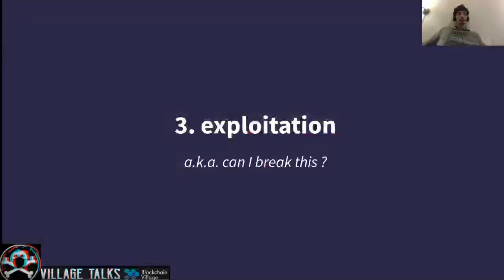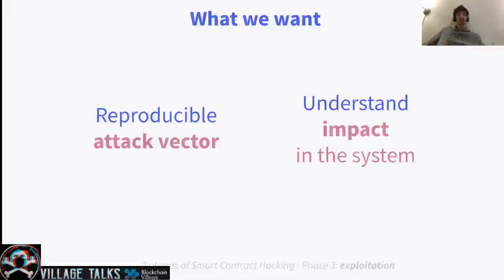Once we have found vulnerabilities, it's time to exploit them — another fun part of doing security research. To do exploiting, what we want is first to have a reproducible attack vector — some way of sharing with the client or the bug bounty report we are about to submit, proving that there is a vulnerability that can be exploited under a certain scenario. We also need to understand the impact that exploiting this would have in the system, and for that we need business logic knowledge related to the system we are assessing.